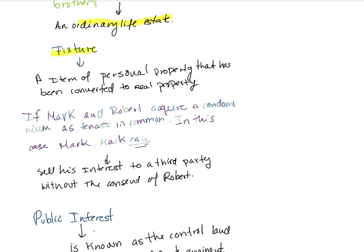Make sure when you sign something so important, you know what you're signing. A fixture is an item of personal property that has been converted to real property. For example, if you own land and build a house on it, that becomes real property.